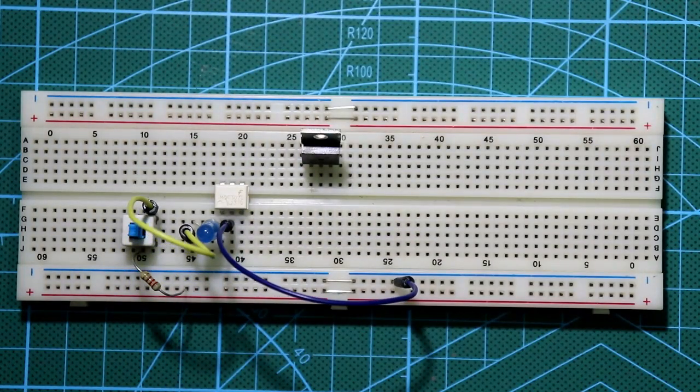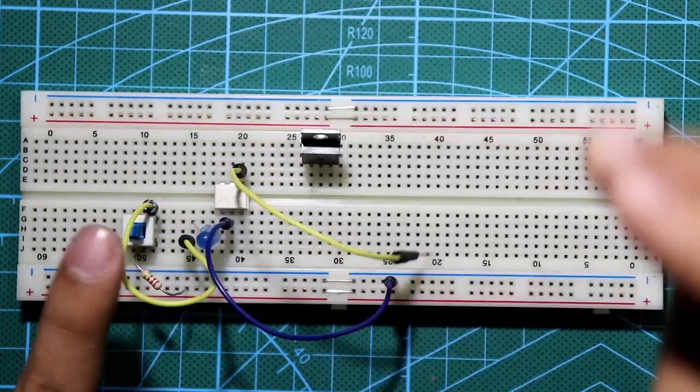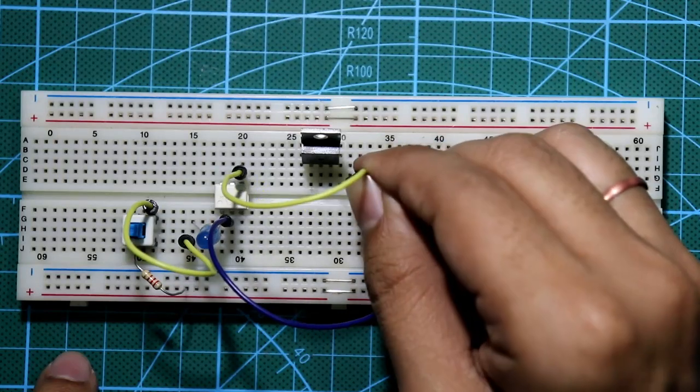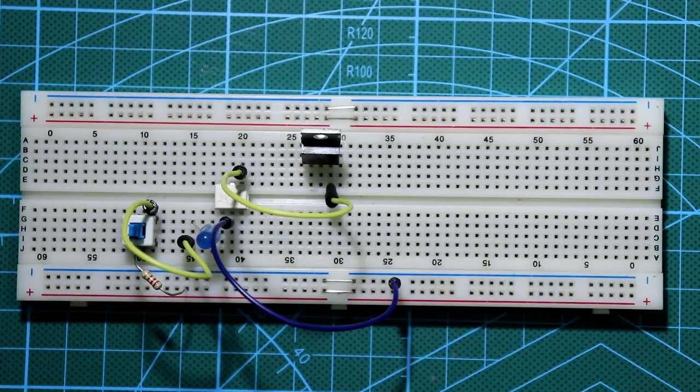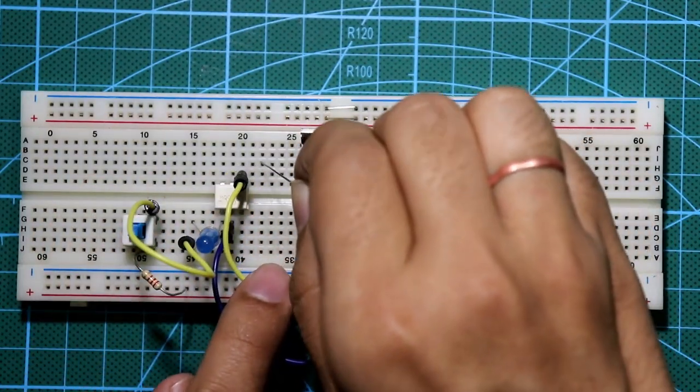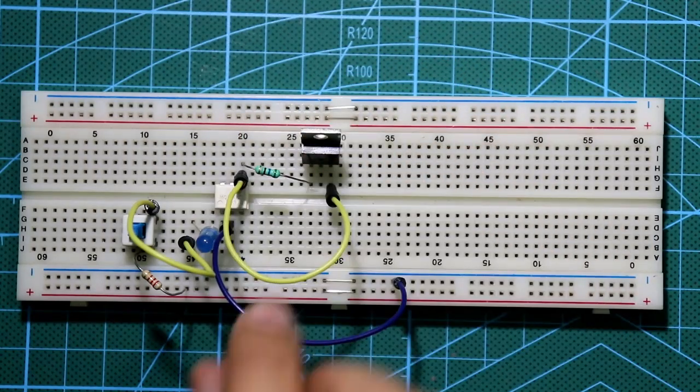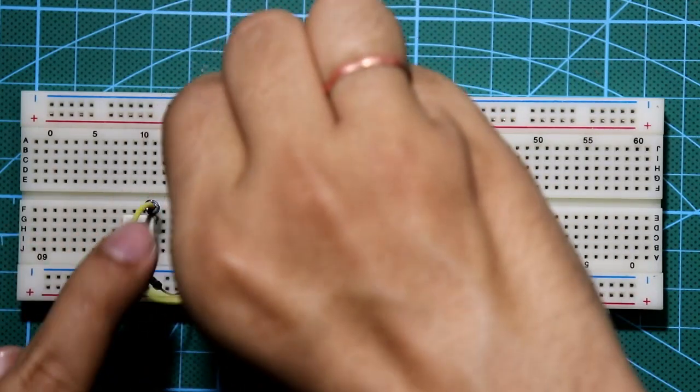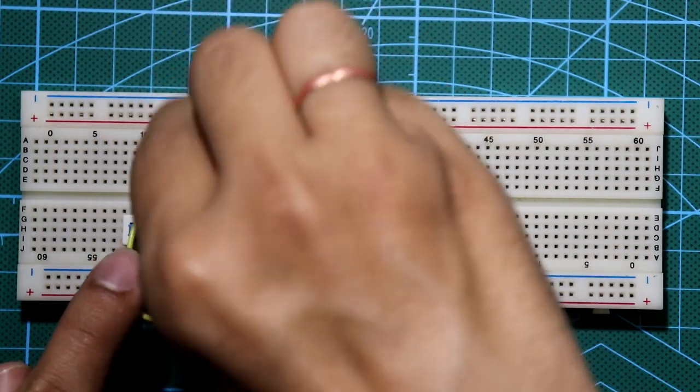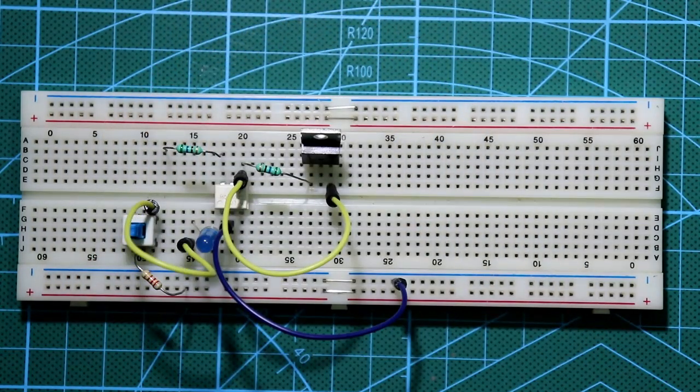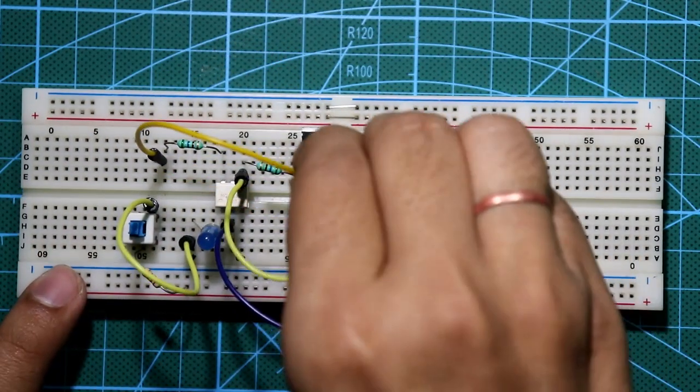According to the circuit diagram, pin number four of optocoupler is connected with gate of the triac. A 560 ohm resistor is connected between MT1 and pin number four of optocoupler. Another 560 ohm resistor is connected with pin number six, then it is connected to MT2.